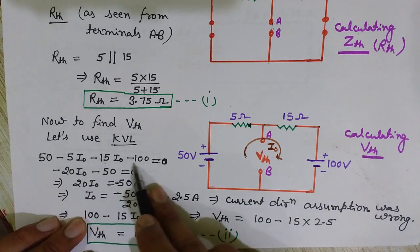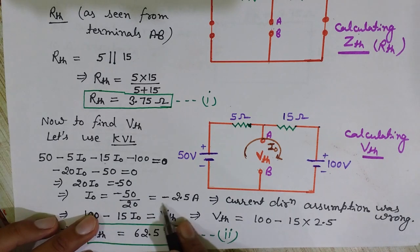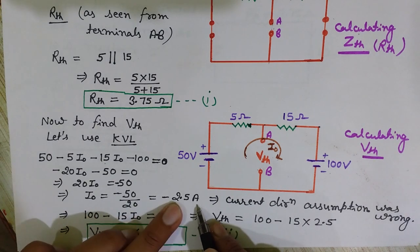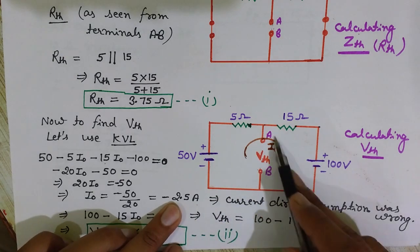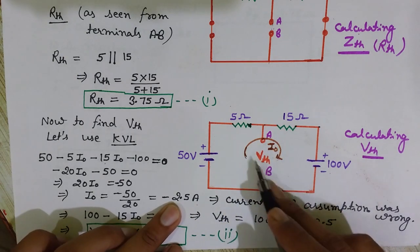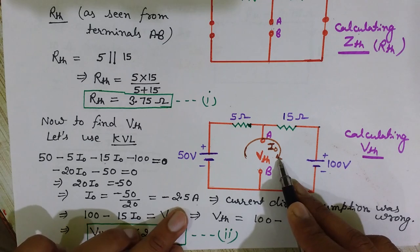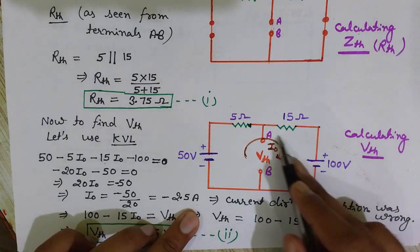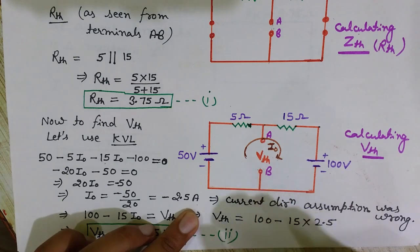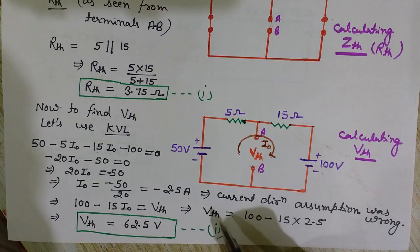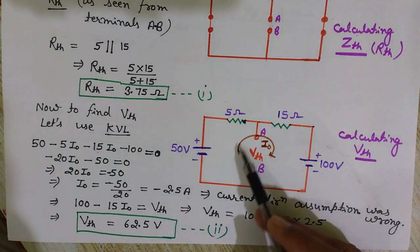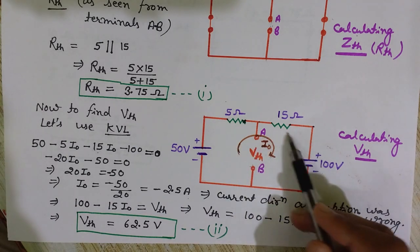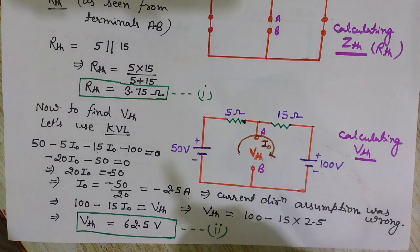Since I0 is negative, it means the direction of current we assumed is wrong. The current is 2.5 amperes in magnitude, but its actual direction is anticlockwise — opposite to the direction we originally assumed.